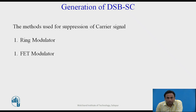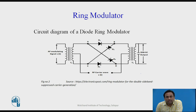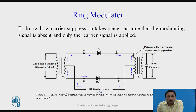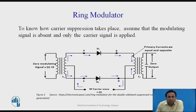This is the circuit diagram for the ring modulator. The diodes are connected in a ring arrangement, which is why it is called a diode ring modulator. It consists of transformer T1 (input transformer) and transformer T2 (output transformer), along with four diodes D1, D2, D3, and D4.